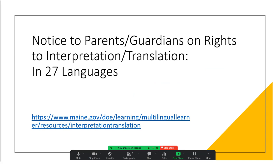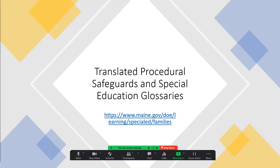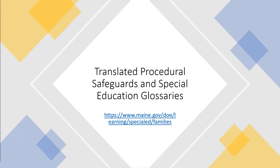Our notice to parents and guardians on the rights to interpretation and translation services is available in 27 languages, and you can access it at this link. The translated procedural safeguards and special education glossaries can also be accessed through the link on the slide. The glossaries are useful in helping families and sometimes interpreters to understand the listed terminology.